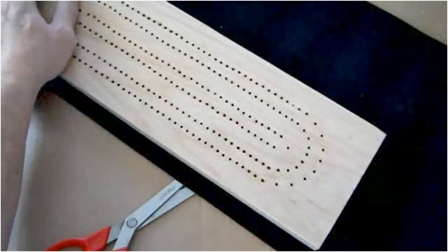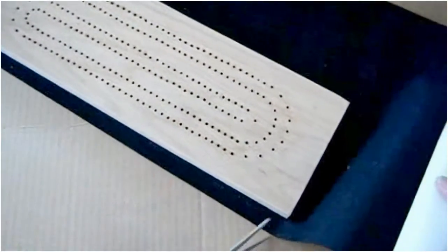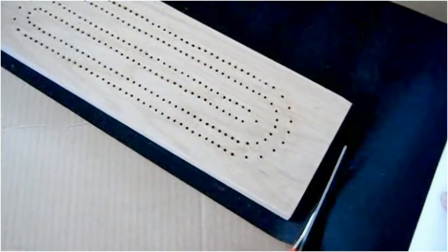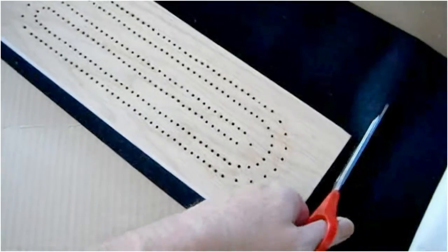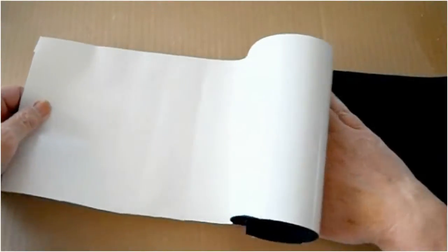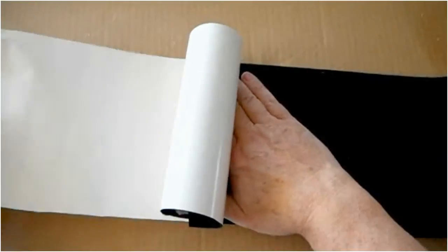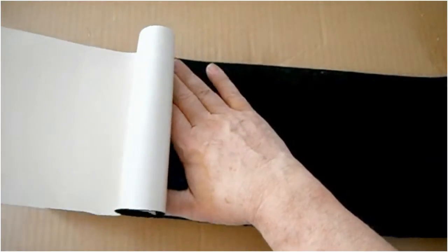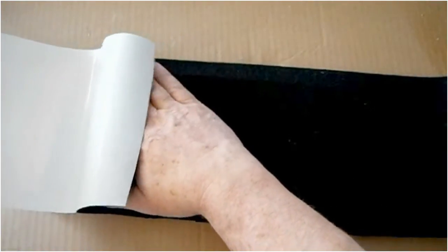I bought some sticky back felt off of eBay to attach to the bottom of my cribbage board. Lay the board on the felt, and rough trim around the board to get a general size. Then peel off the backing and press the felt onto the back of the cribbage board. Finally, trim off the excess close to the edges.